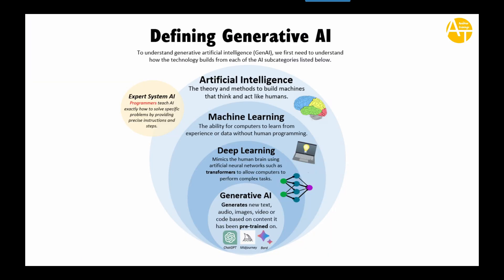Now, how do you define Generative AI, what's the technology behind it, and how are AI and Generative AI different? Generative AI is a subset of AI. To understand Artificial Intelligence we need to first understand how the technology builds from each AI subcategory. First comes the broad field of Artificial Intelligence — the theory and methods to build machines that can think and act like humans. You are now creating computers which can think like humans, and the computer gets that brain information because it is trained or pre-trained with millions and billions of data.